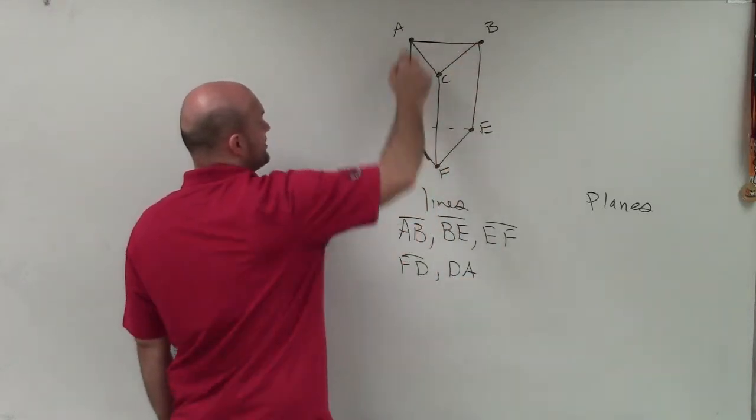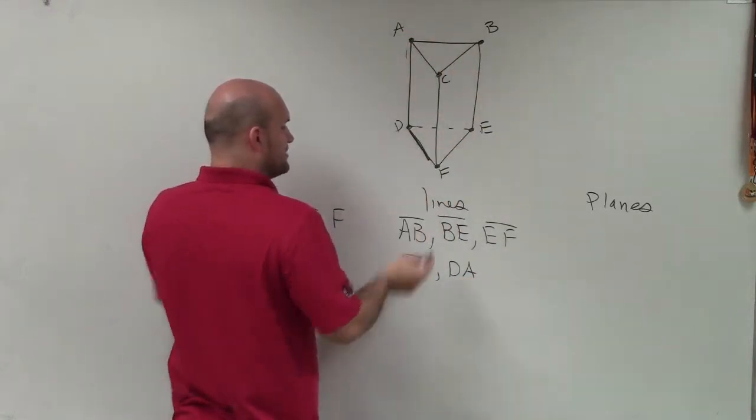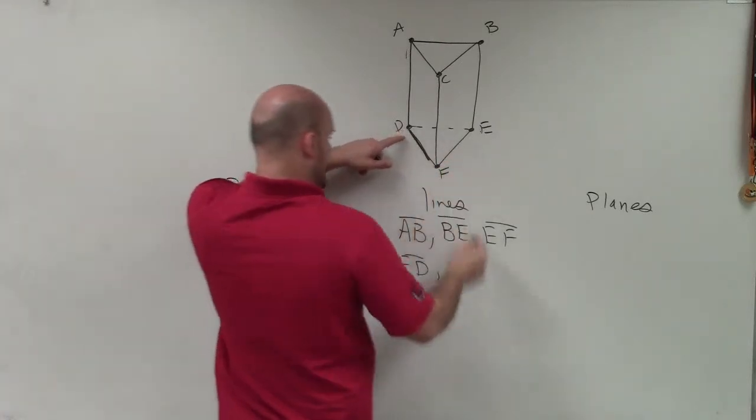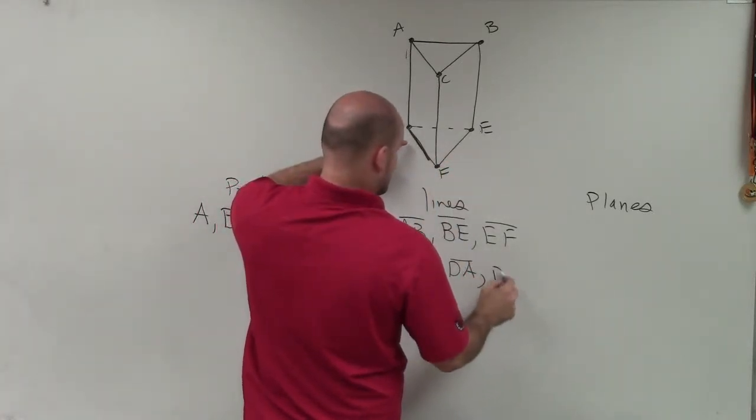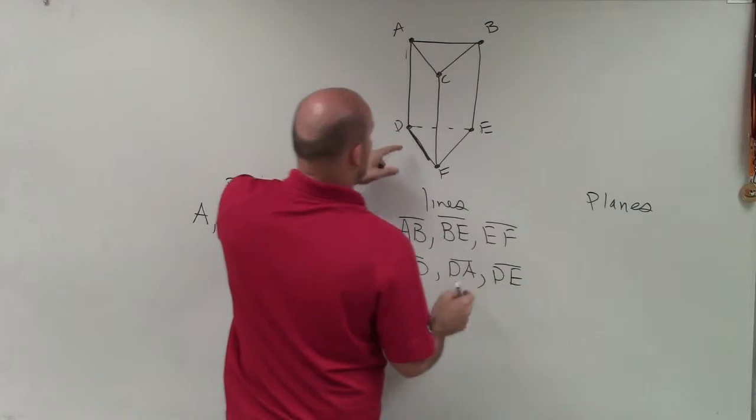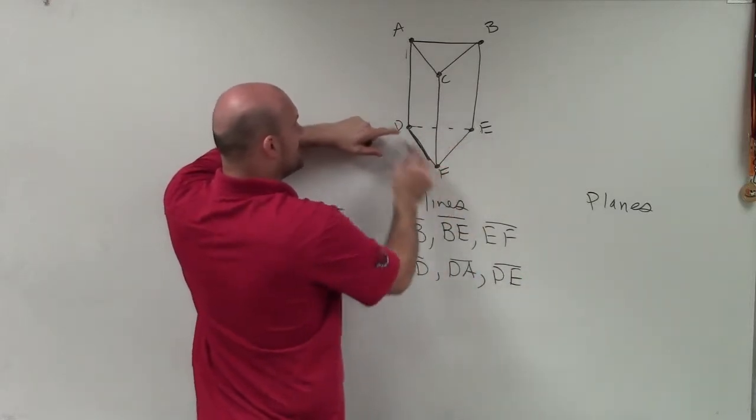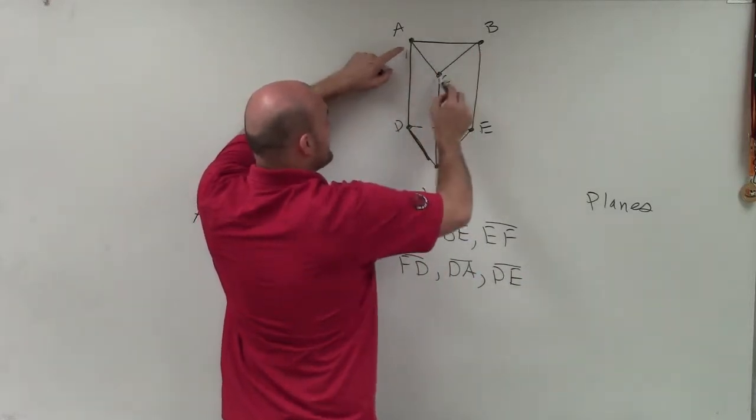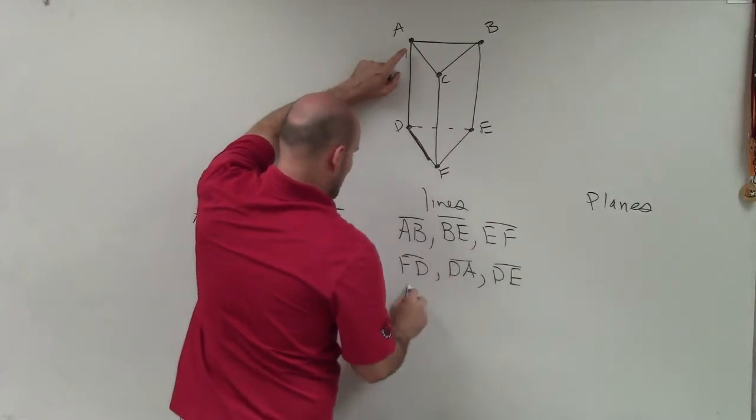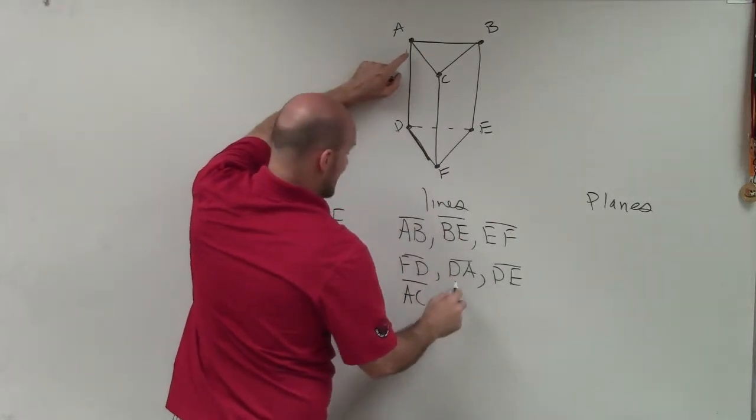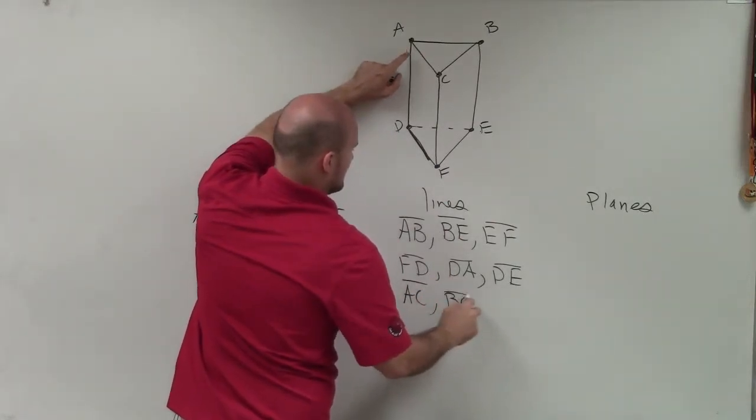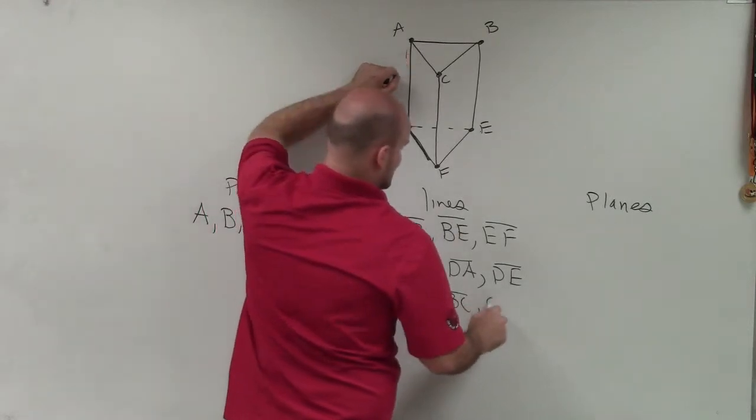So that was kind of like the perimeter all the way around. But you could see also in the back way, I also have DE. And then, now, I went all the way here. Now I have these two and then this one. So I have line AC, line BC, as well as line CF.